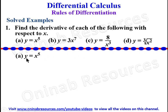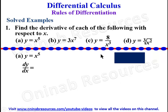Starting from problem 1a: to find dy/dx, we multiply the power by the coefficient — x to the power 5 minus 1. We have multiplied the power which is 5, then reduced the power by 1. So we now have dy/dx = 5x to the power of 4 as the derivative of y = x^5.